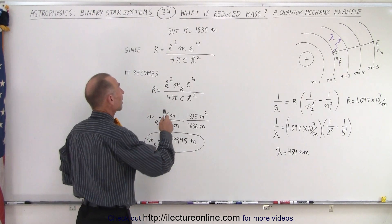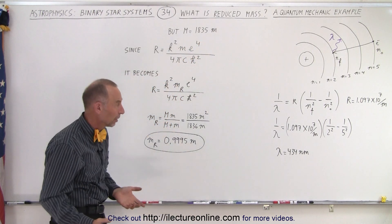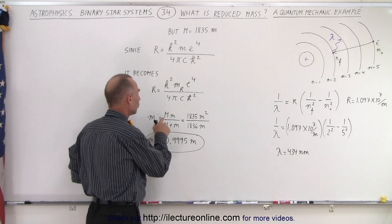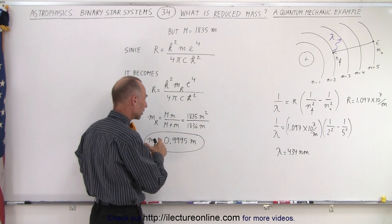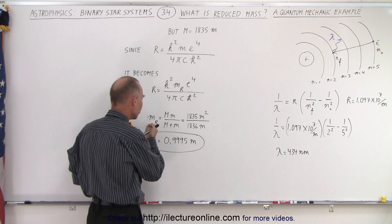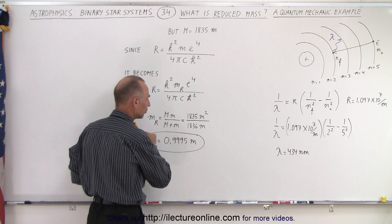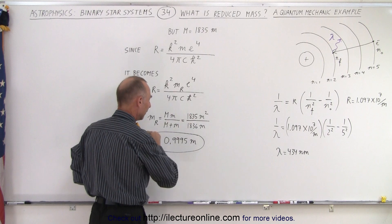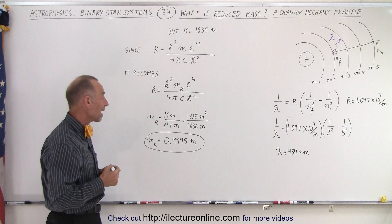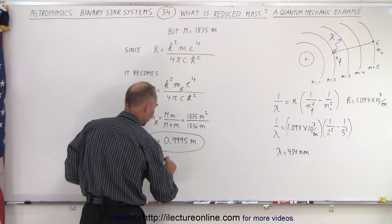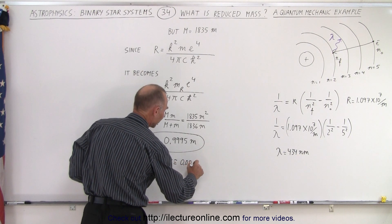The mass of a proton is approximately 1835 times the mass of an electron. So if we put that into the equation, we can replace the mass of the proton by 1835 times the mass of the electron, and essentially the reduced mass becomes 1835 divided by 1836 times m. That's about 0.9995 times the mass of the electron, which means the difference is approximately 0.05 percent.